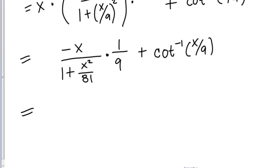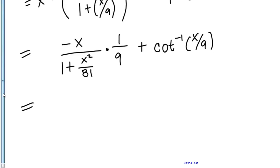Now what I can do to make this nicer is distribute this 9 in the denominator. You can think about distributing this 9 to both terms. This becomes negative X over 9 plus 9X squared over 81, which would reduce to X squared over 9, plus still this inverse cotangent.